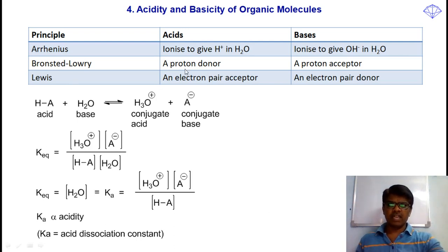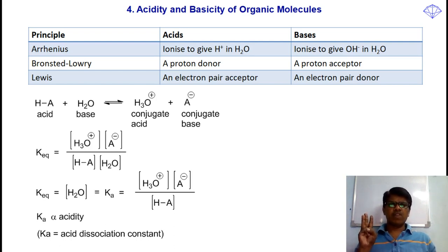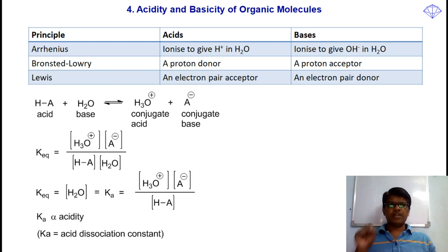Bronsted and Lowry theory says that a proton donor is an acid, whereas Lewis theory says that an electron pair acceptor is an acid. There are only three theories in chemistry which explain acidity and basicity: first, Arrhenius theory — a compound ionizing to give H-plus in water is an acid, giving OH-minus is a base; second, Bronsted-Lowry — proton donor is acid, proton acceptor is base; third, Lewis theory — electron pair acceptor is acid, electron pair donor is base. This is how acidity and basicity can be explained in chemistry.